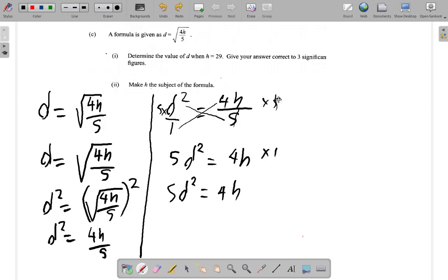The other thing: what we did here was to say the square root and the square cancel each other, leaving the 4h over 5 untouched. Let me explain that part a bit.